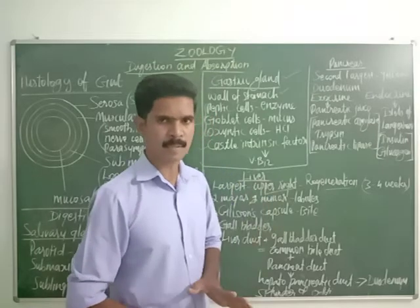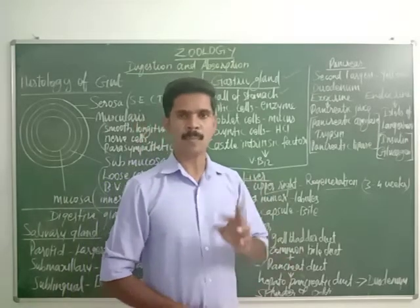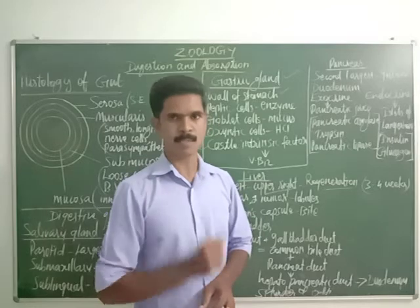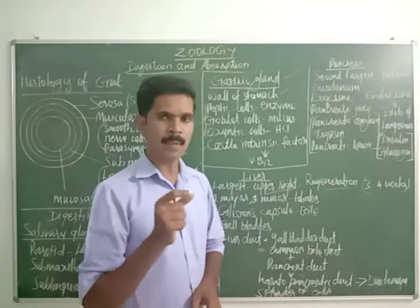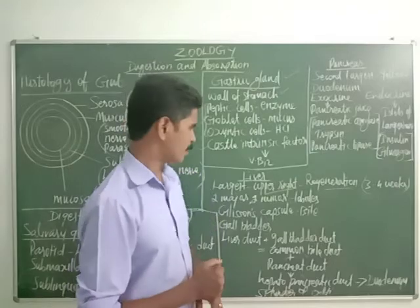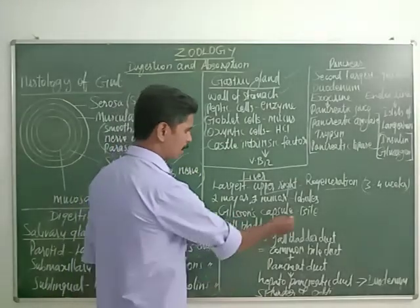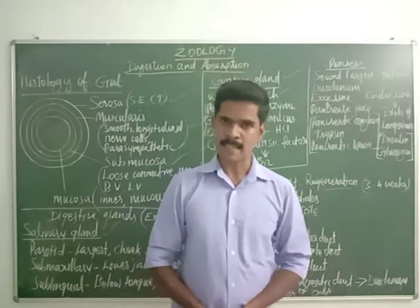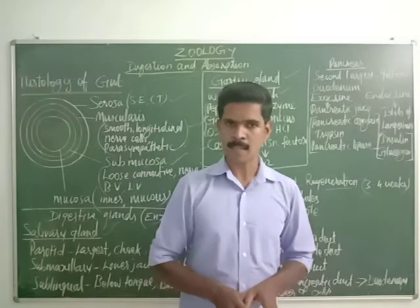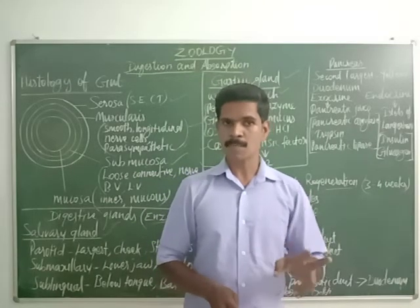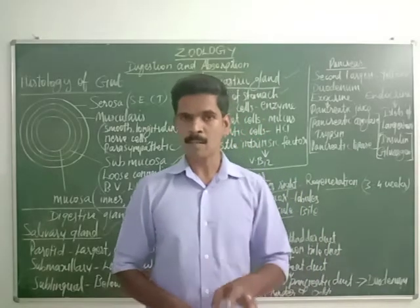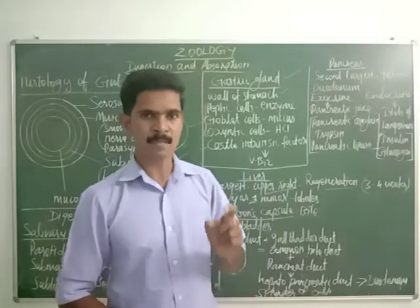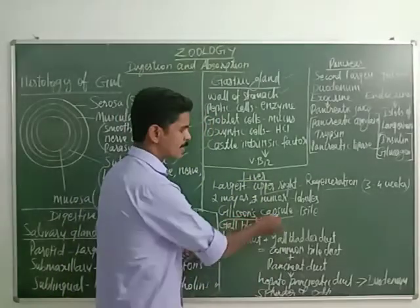All 4 lobes of the liver are again divided into many small lobules. Each lobule is covered by a small membrane called Glisson's capsule. The liver secretes a fluid called bile, which is stored inside another organ called the gallbladder.